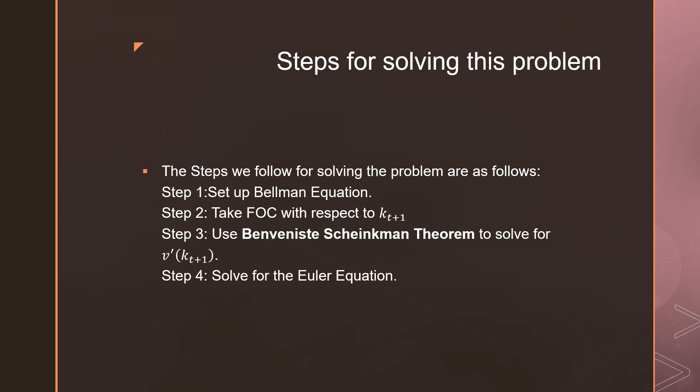Step number three, we're going to use this thing called the Benveniste-Scheinkman theorem. And I'm not going to really go much in detail as I'm just going to illustrate it in this example to go and solve for v prime of kt. And step number four is that we're going to put everything together and solve for the Euler equation.